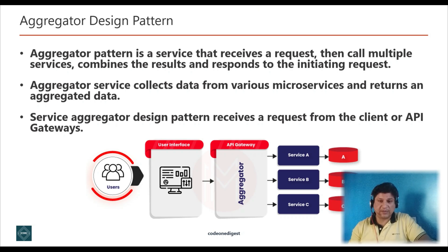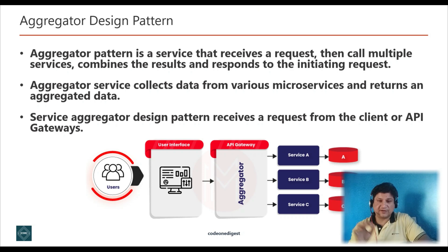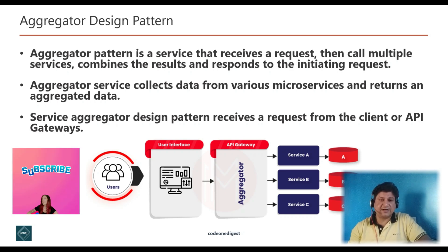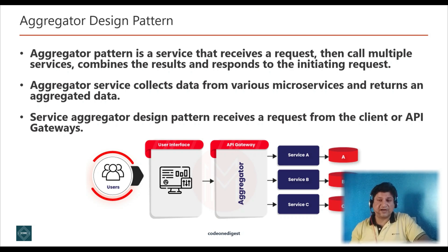The aggregator service receives a request from the client or API Gateway, dispatches requests to multiple internal backend services, combines the results from all those services, and replies back in one response structure. The aggregator microservice collects pieces of data from various microservices and returns an aggregated response, reducing chattiness and communication overhead between the client and microservices.